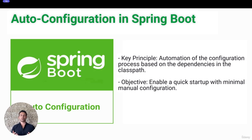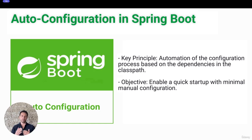Auto-configuration attempts to guess the necessary and specific configuration based on the dependencies you have explicitly added in the pom.xml file if you used Maven in your project. If it detects that you need a database, it will try to configure the connection automatically.